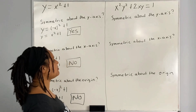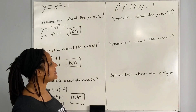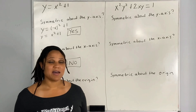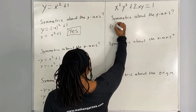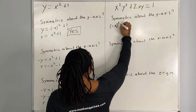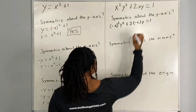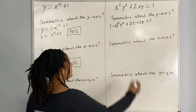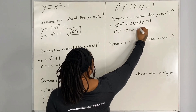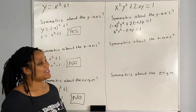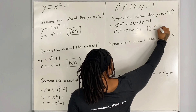Now let's look at our second problem. We have x squared times y squared plus 2xy is equal to 1. We want to ask ourselves, is the graph of the equation symmetric about the y-axis? We are going to replace x with negative x and see if we get the original equation. Here we have x squared y squared minus 2xy is equal to 1. We do not get the original equation, therefore it is not symmetric about the y-axis.